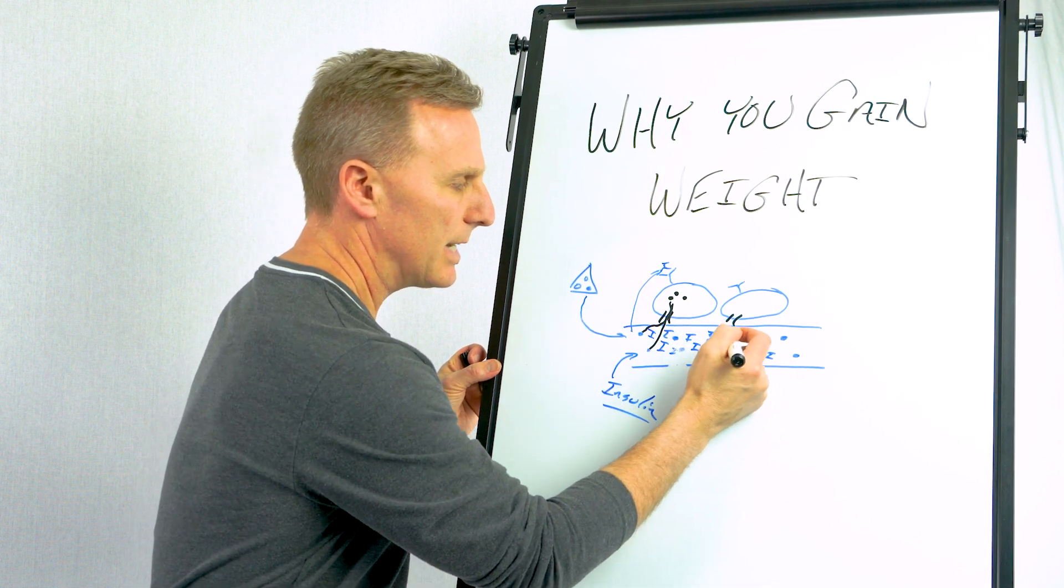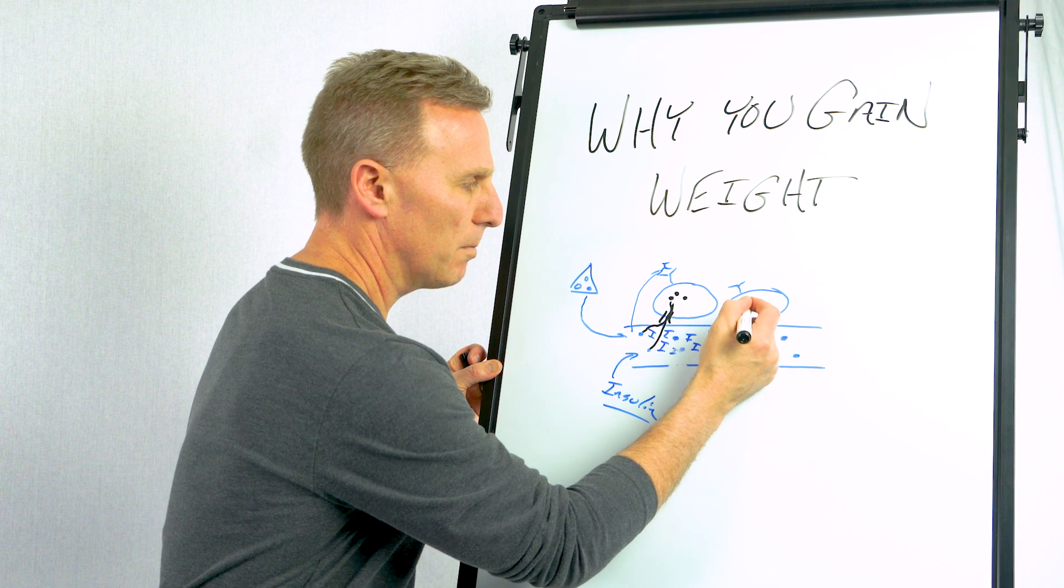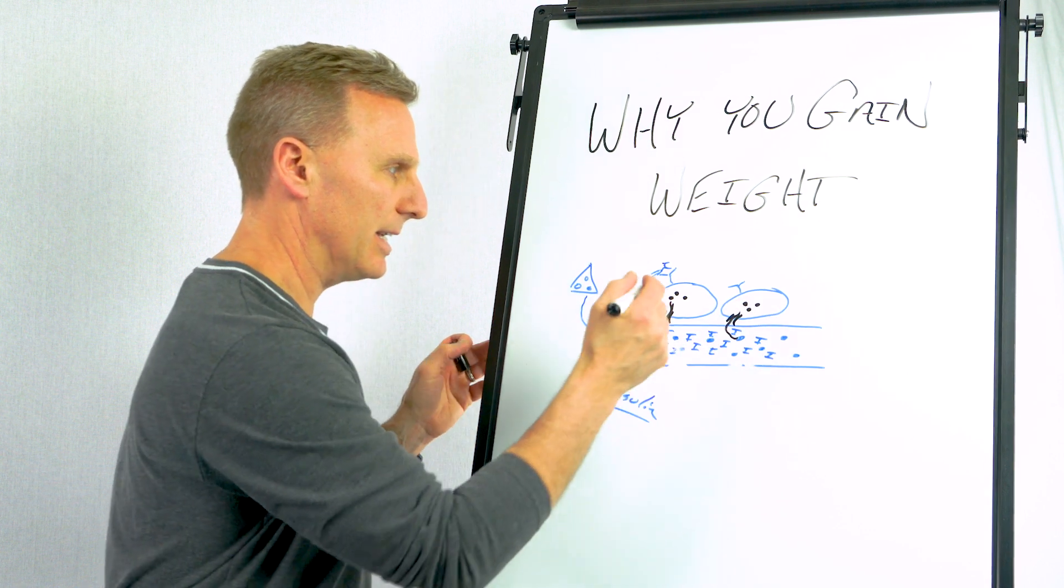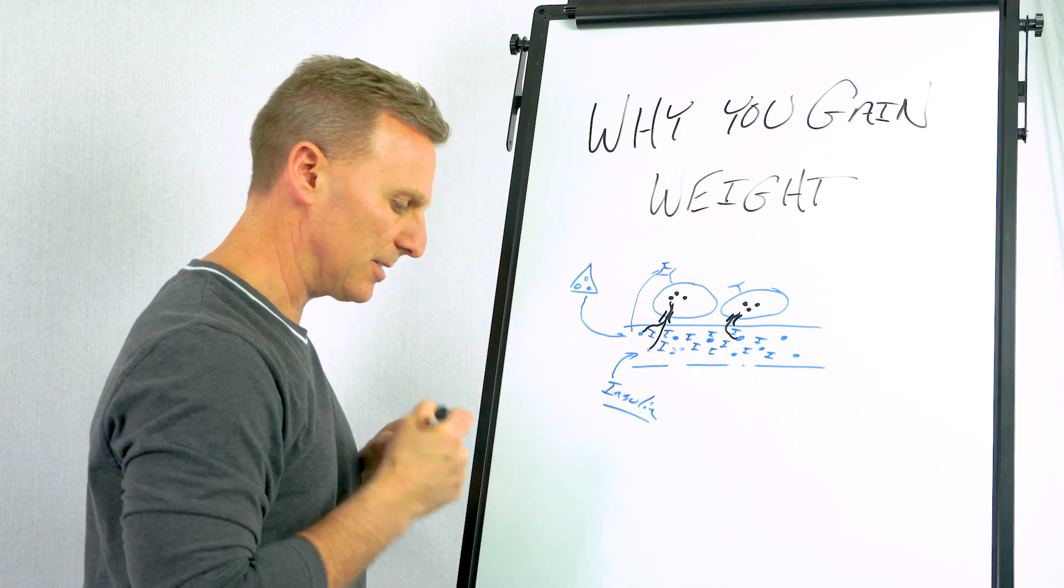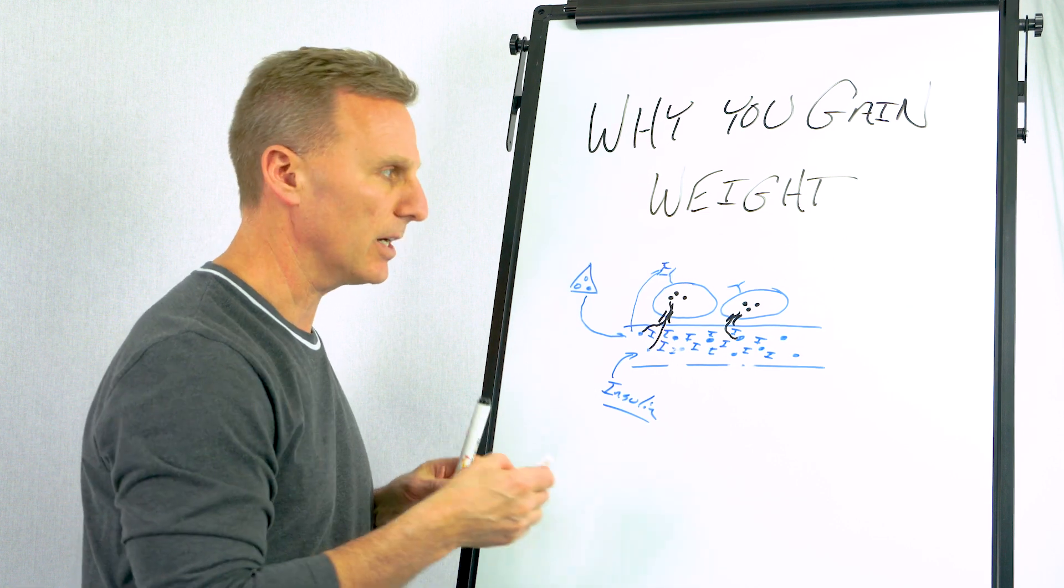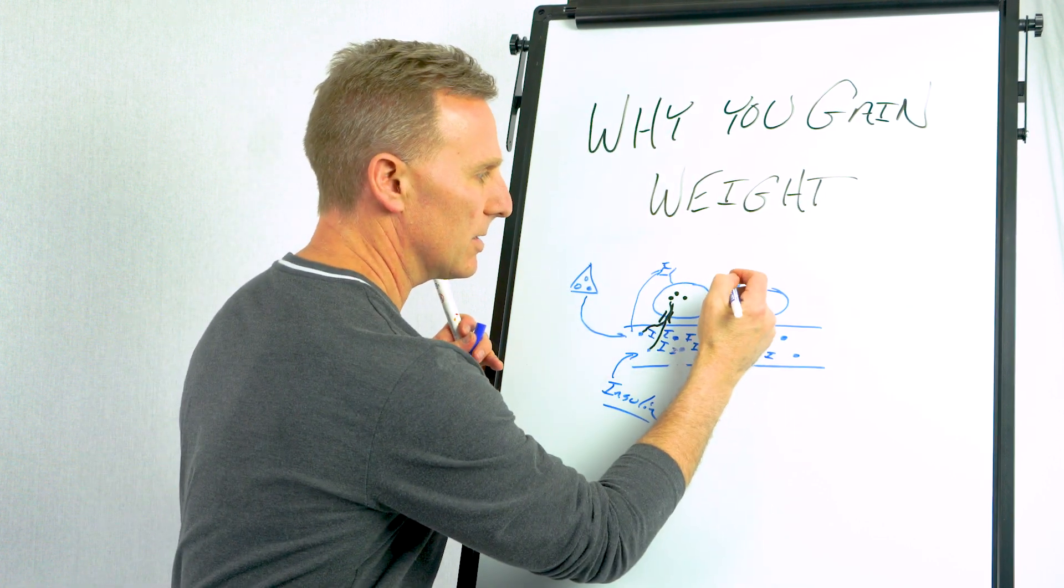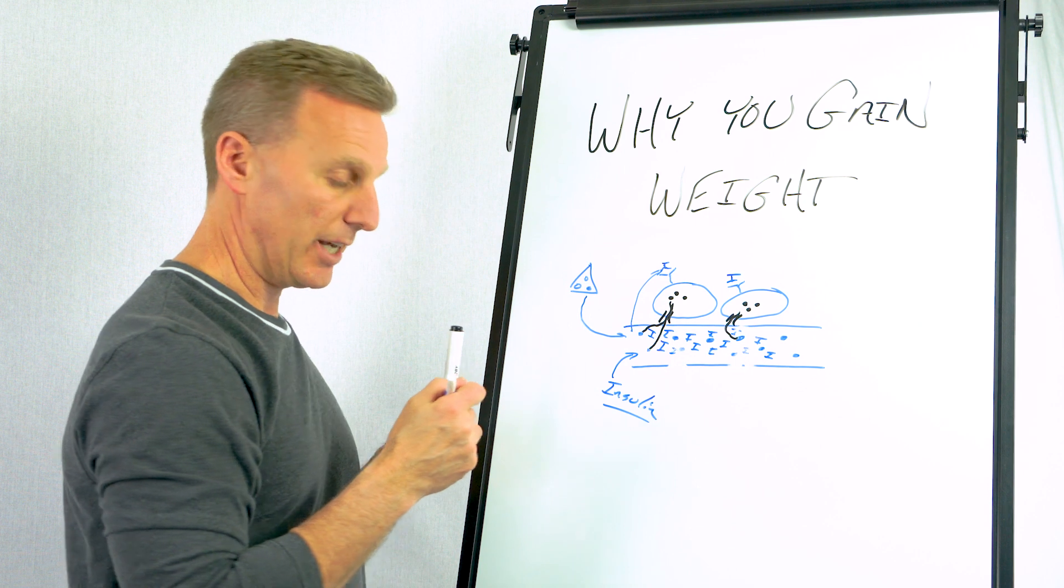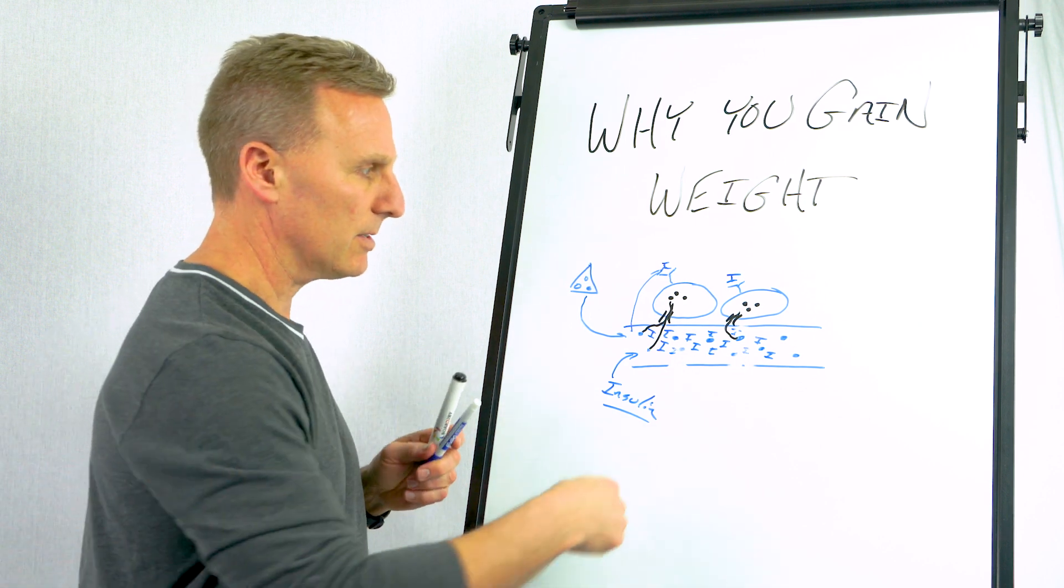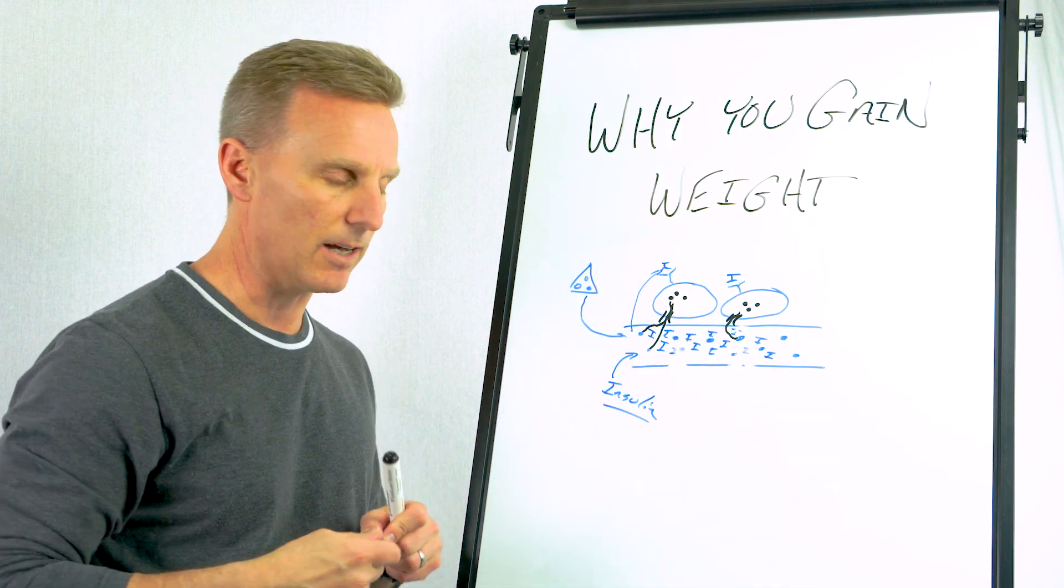That's how diabetics control their blood sugar when they take insulin, is the insulin is attaching itself to these receptors that are specific for insulin, and that causes gates or channels to open up in the membrane of cells, and then the glucose goes into the cell.